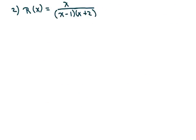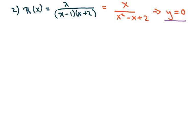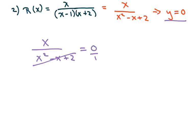The next one is x over x squared minus x minus 2. Again, the degree in the numerator is less than the degree in the denominator, so the horizontal asymptote is y equals 0. We set our equation equal to 0 and cross multiply — this just cancels out, so we get x equals 0. It crosses at the origin, (0, 0), where x is 0 and y is 0.